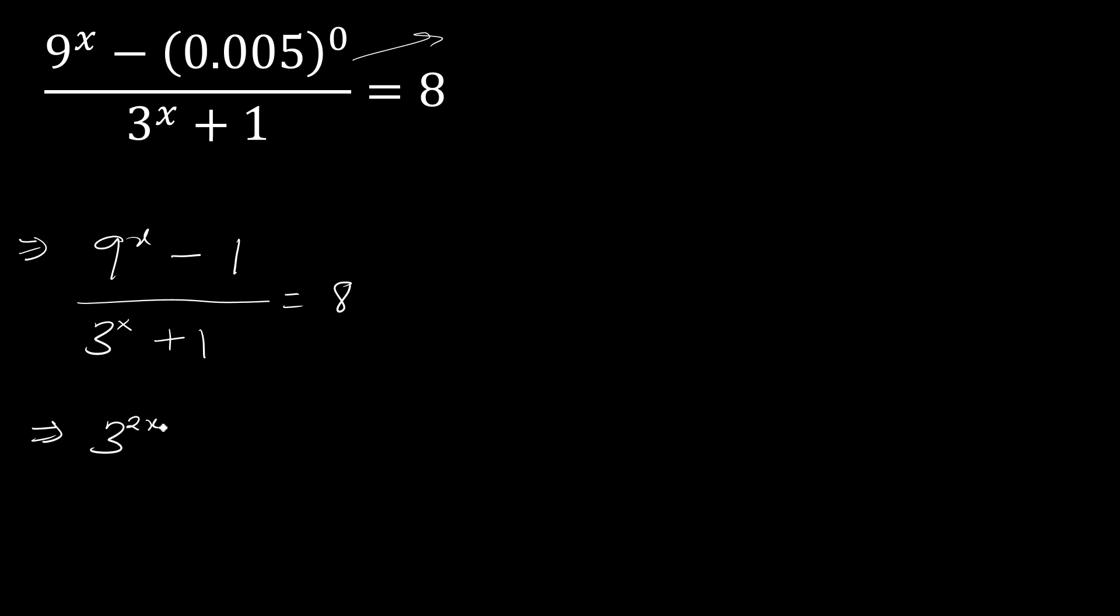And to multiply the power minus 1 over 3 raised to x plus 1 equals to 8. Now, in case we have, let's say, a raised to n raised to x, the same as a raised to n times x, so we can rewrite...